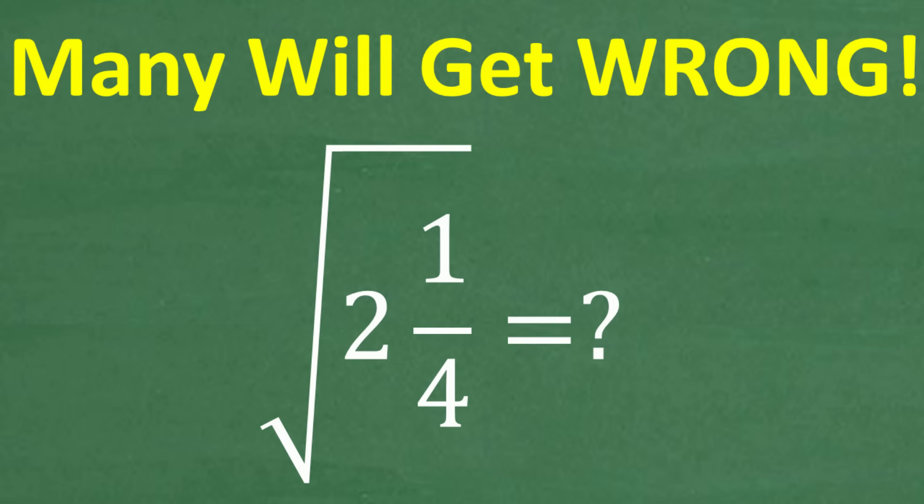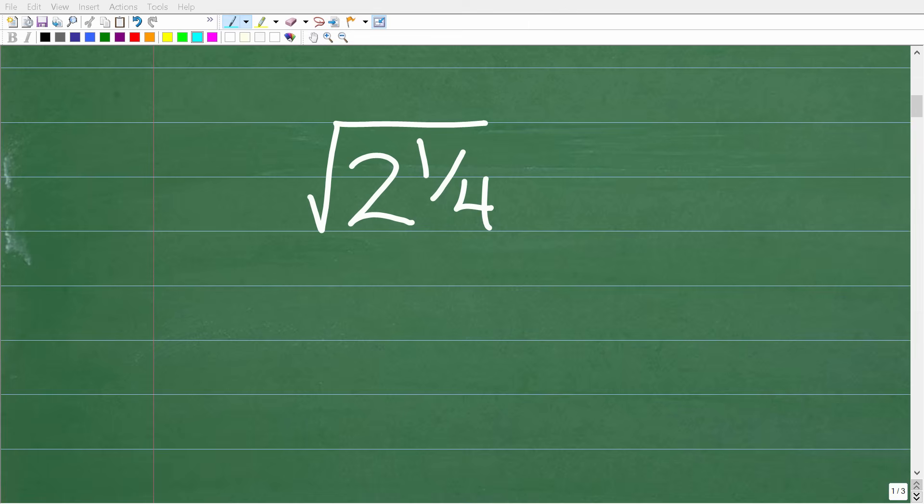All right. So once again, no calculators. What is the square root of 2 and 1/4? Many of you may be surprised how easy it is to get the answer. So what makes this problem really confusing for a lot of people is that we're taking the square root of a mixed number fraction. A mixed number fraction is where you have a number and then a little small fraction after that number. So this is what we call a mixed number fraction in mathematics.